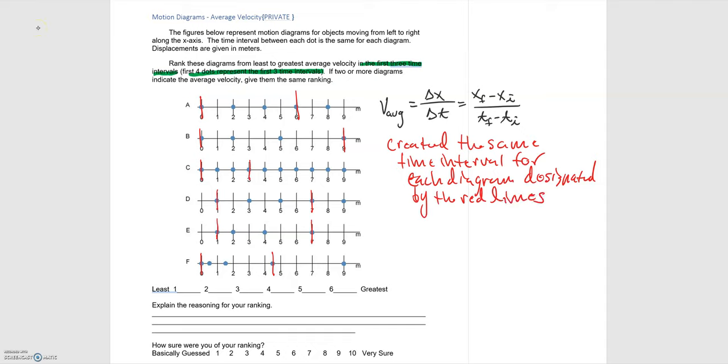Recall from the first average velocity example, when we have the same time interval we just need to look at what the displacement is to be able to rank the average velocities, because for the same time interval a larger displacement will give a larger average velocity.